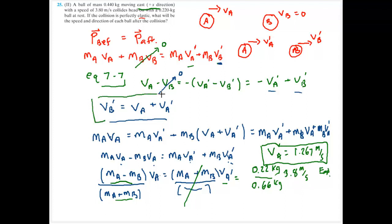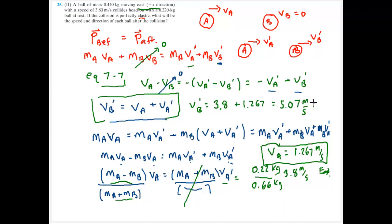Going back to the energy equation, velocity B prime equals velocity A plus velocity A prime: 3.8 m/s plus 1.267 m/s gives 5.07 m/s east. That is the final velocity of B prime.